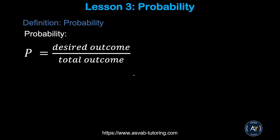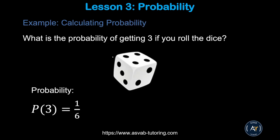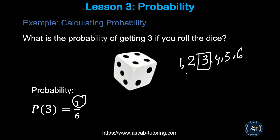The next thing we'll learn is probability. Probability is also a very common topic in the officer candidate test — you might see a couple of problems based on that. Probability is defined as desired outcome over total outcome. Say you are rolling a die — it has 6 sides: 1, 2, 3, 4, 5, 6. What is the probability of getting a 3? There is only one 3, and there are 6 total outcomes. So the probability of getting a 3 is 1 out of 6.